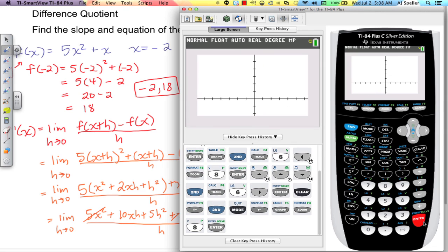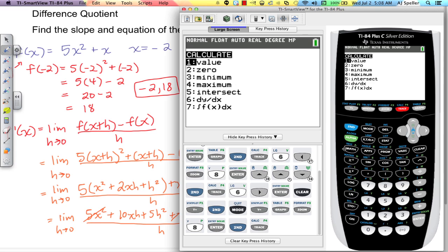So let's take a look at this graph here. Here's the parabola and then we have our linear equation that comes in there. Now let's go ahead and go to second and then trace. We want to go down to 6 to calculate the derivative.